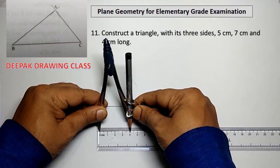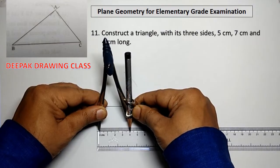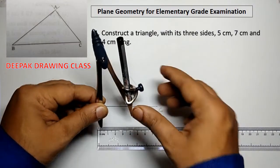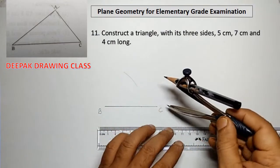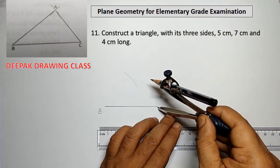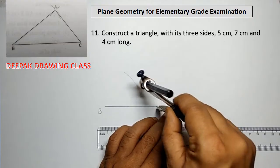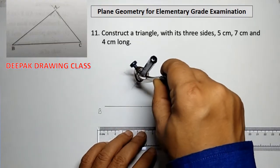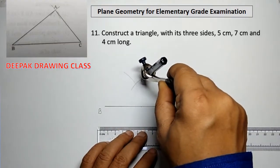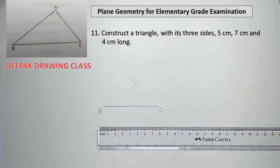With center C and radius of 4 cm draw another arc to intersect the previous arc at the point A.